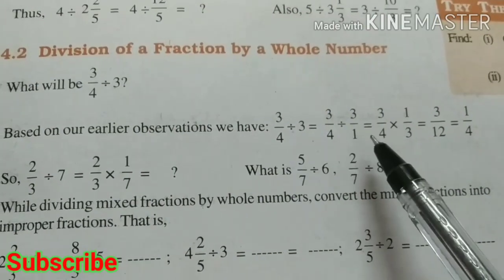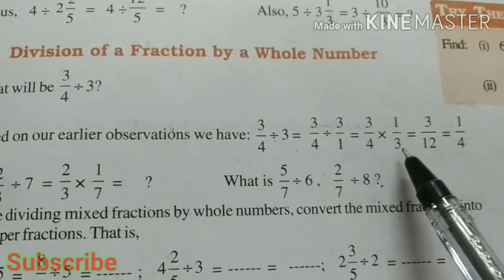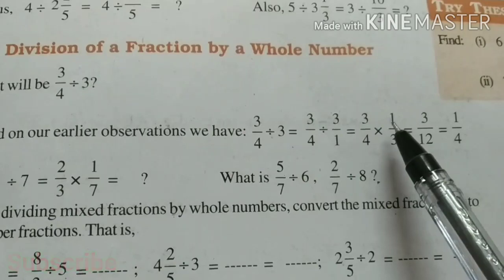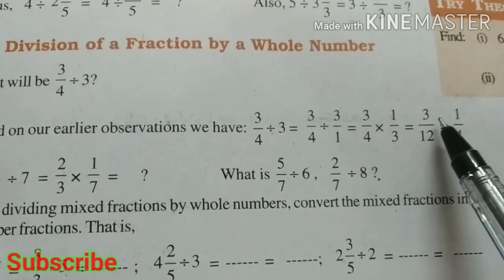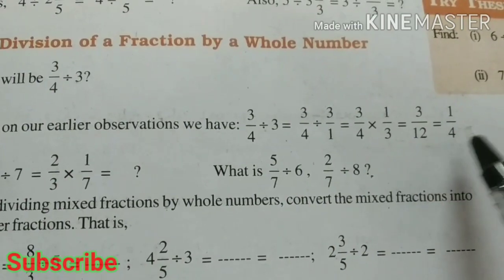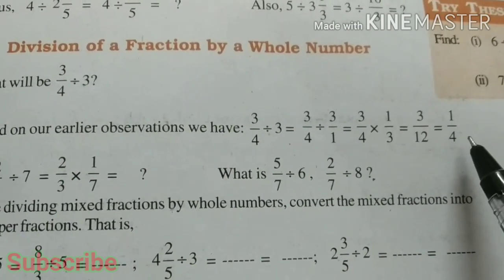We have to write the reciprocal of 3/1, that is 1/3. So 3 × 1 = 3, 4 × 3 = 12. So we get 3/12 = 1/4.